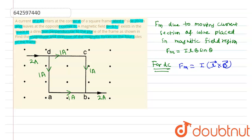When we take the cross product of L and B, the direction of magnetic force will be in this direction. And the value of magnetic force for DC section will be: